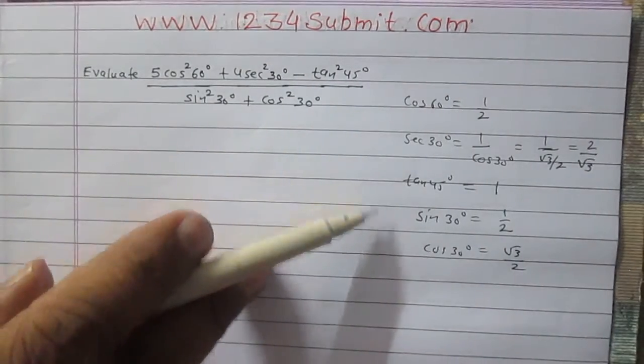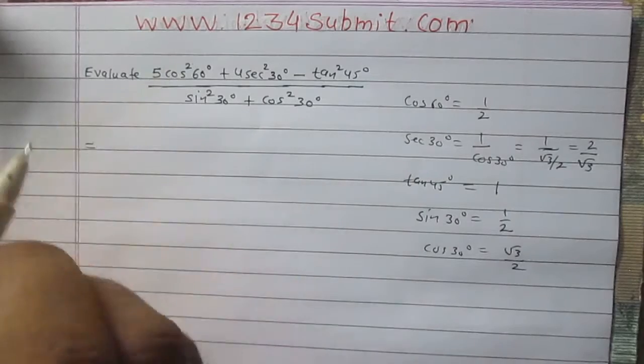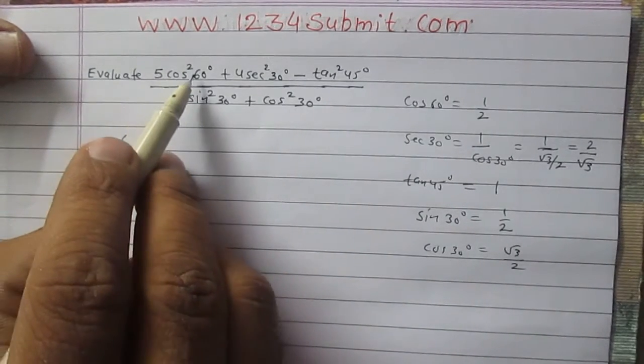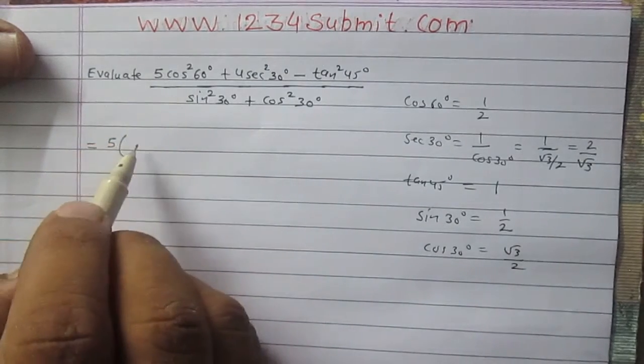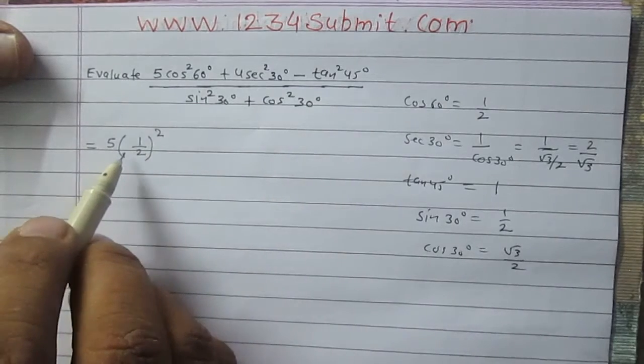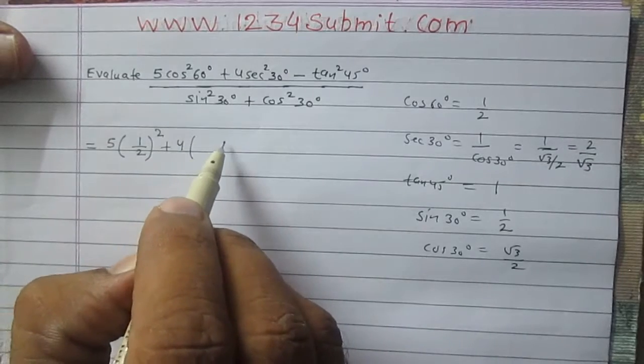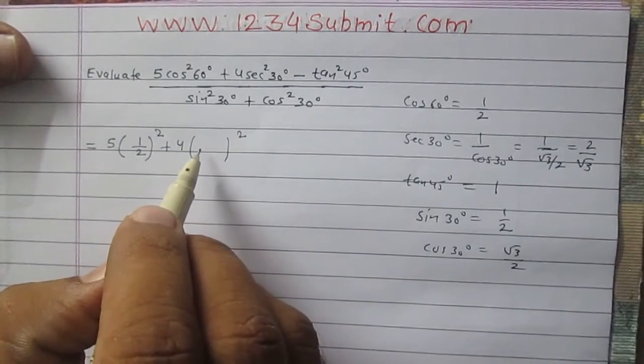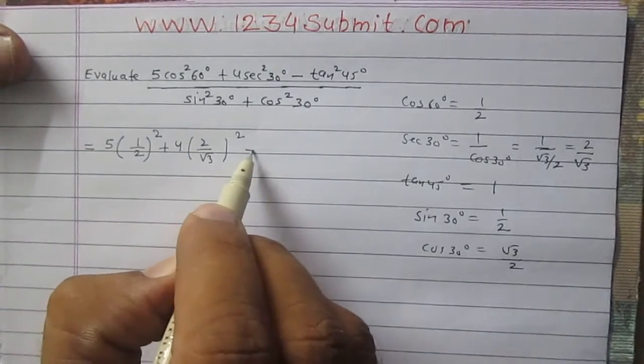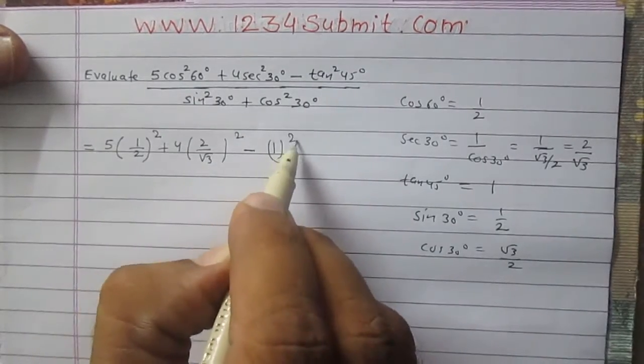Using all these values, we can write this term as 5 multiplied by cos square 60 degree, which is 1 upon 2 square, then 4 multiplied by square of sec 30 degree that is 2 upon root 3, then minus tan 45 degree square that is 1 square.